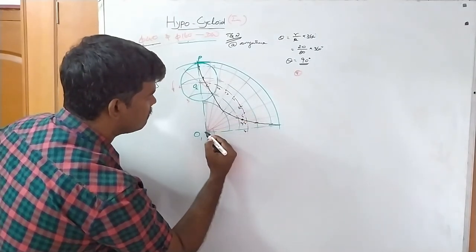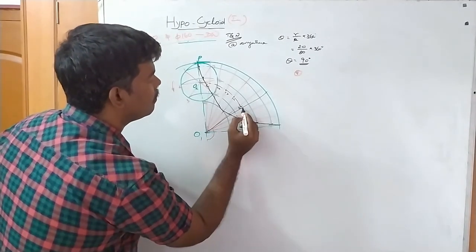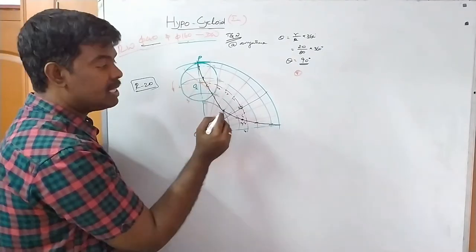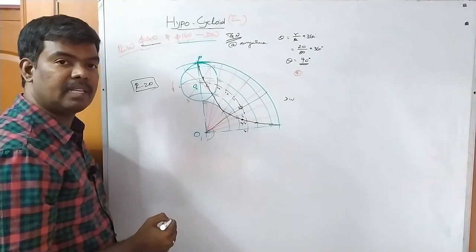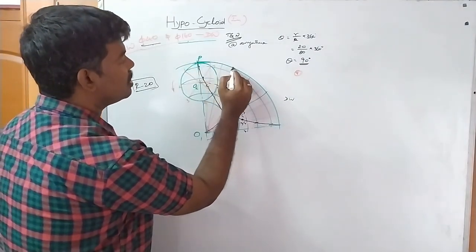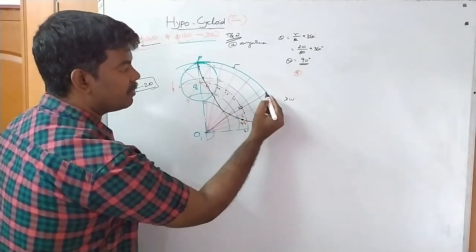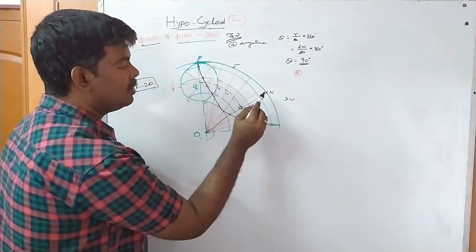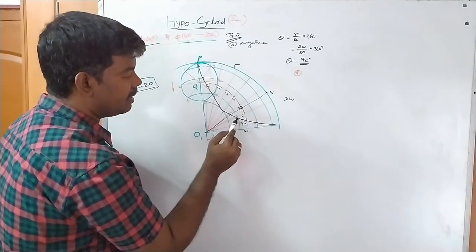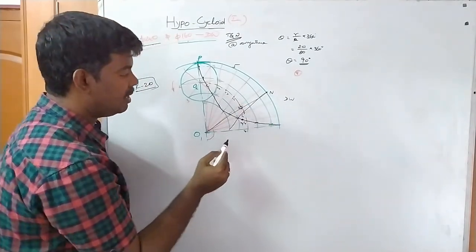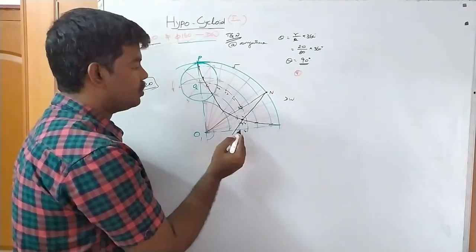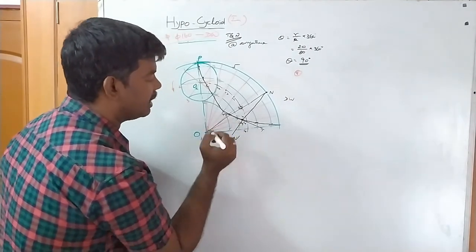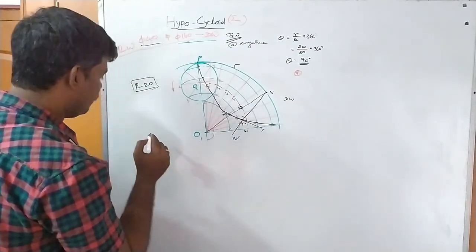Join that intersection point to get a line. The normal always goes from the curve point toward the directing curve. In this diagram, the outermost arc is the directing wheel, so where the normal line intersects that arc is point N. Join N and M — that line is the normal. Since tangent and normal are perpendicular to each other, draw a line perpendicular to NM through M — that is the tangent T-T dash.